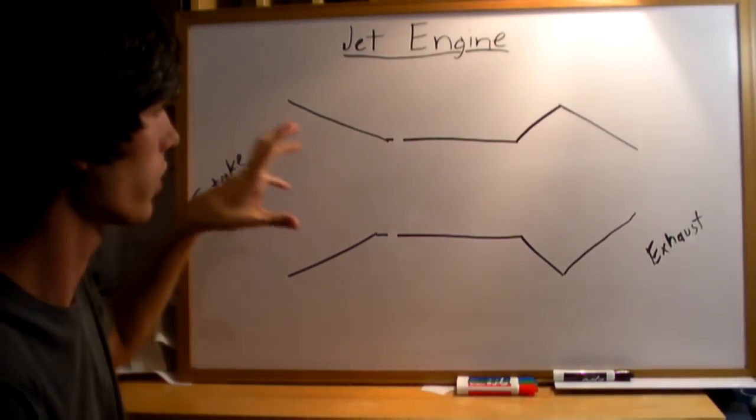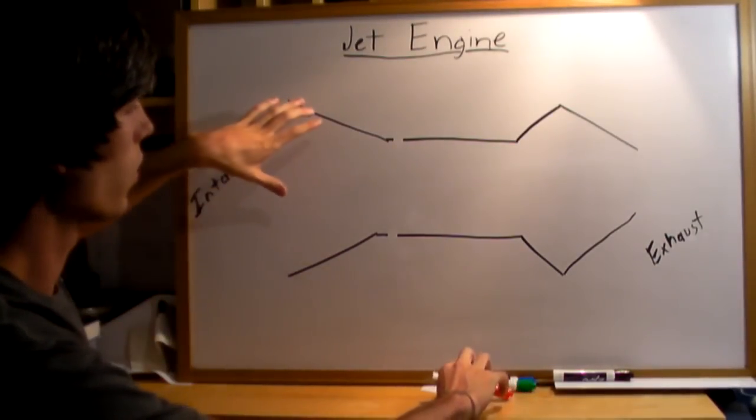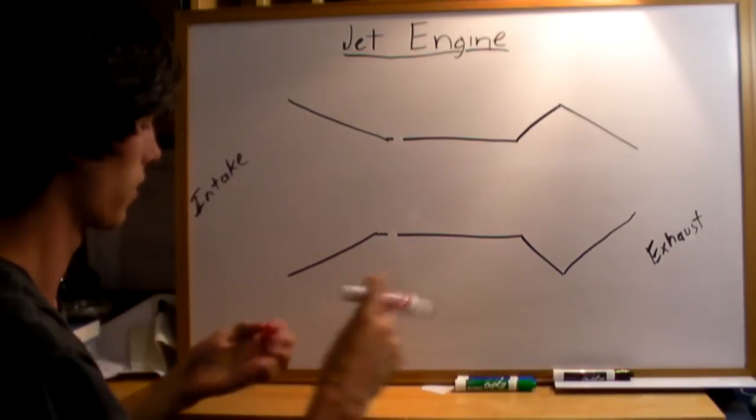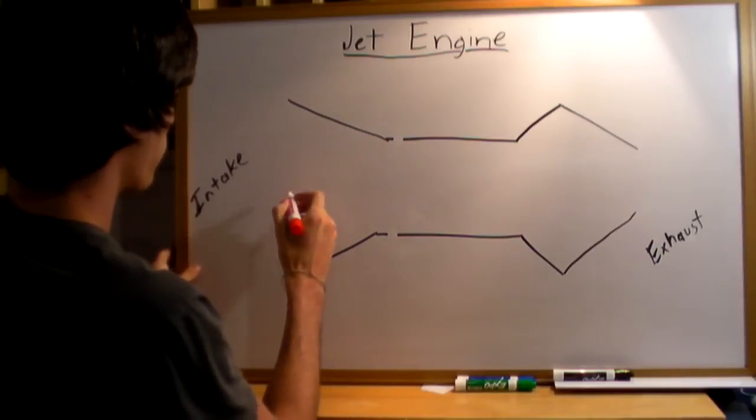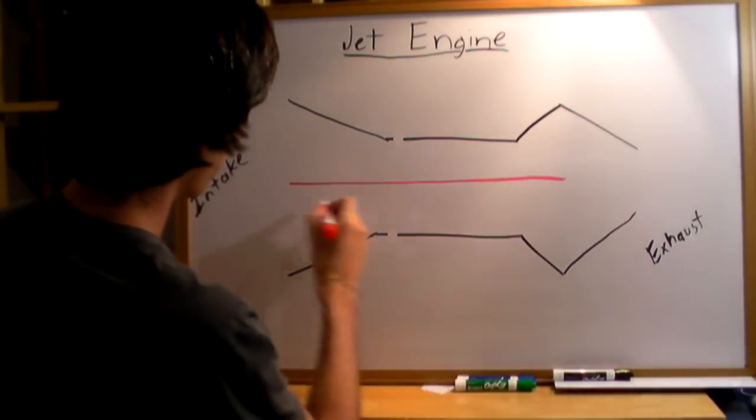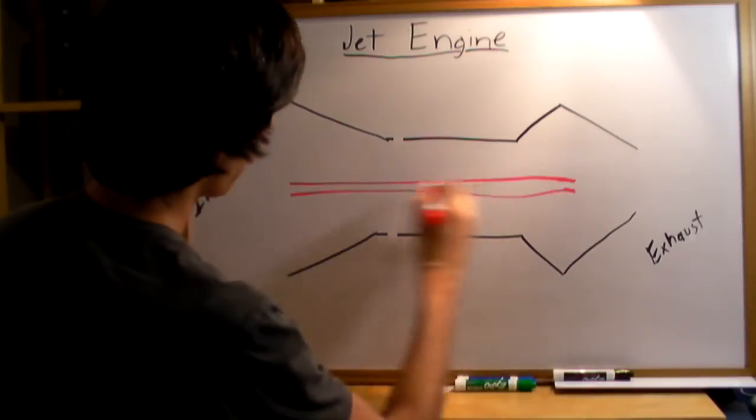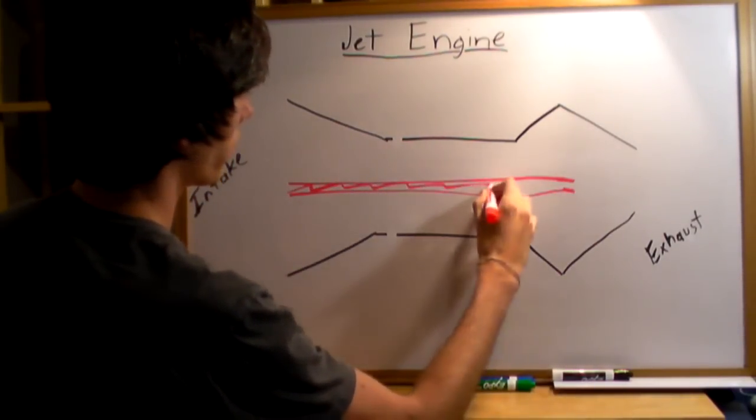So I'm actually going to start by drawing the whole thing. So we've got the casing of the turbine itself, and first we're going to have a shaft here in the middle that runs the length, and so we've got this shaft here.